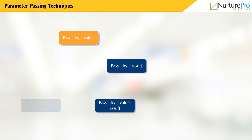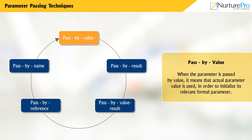Pass by value: When the parameter is passed by value, it means that the actual parameter value is used to initialize its relevant formal parameter. It then becomes a local variable within the sub-program. This parameter passing method belongs to in-mode semantics.